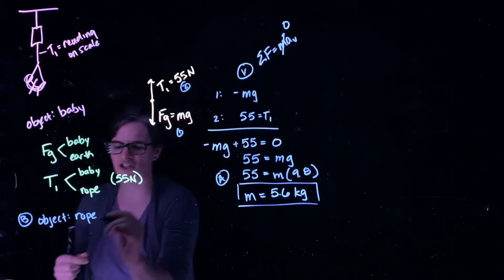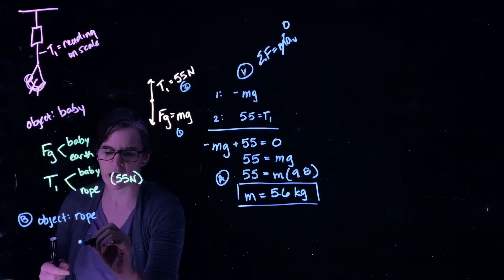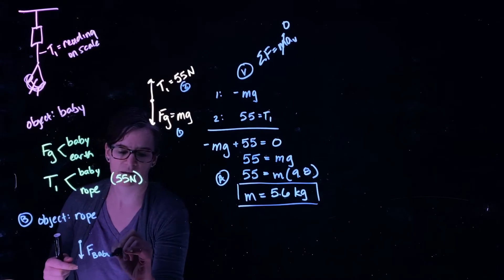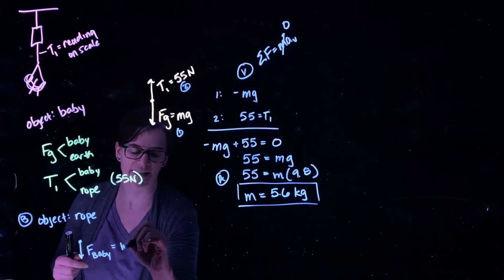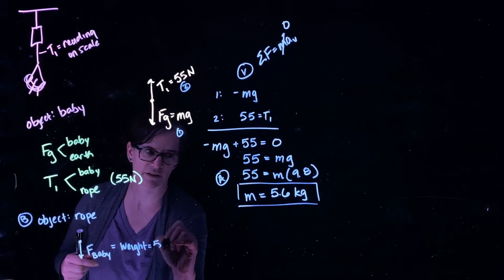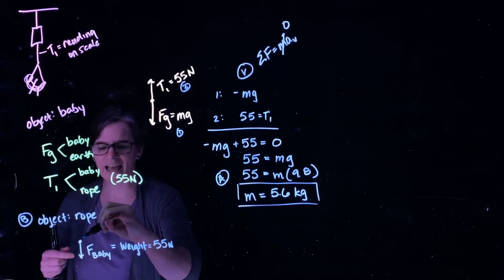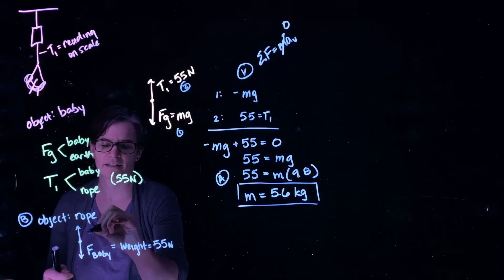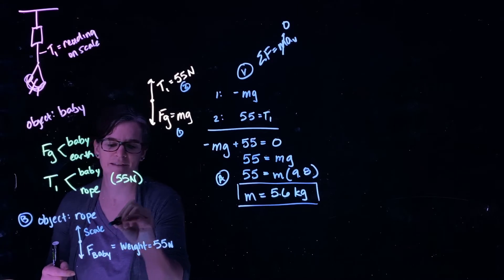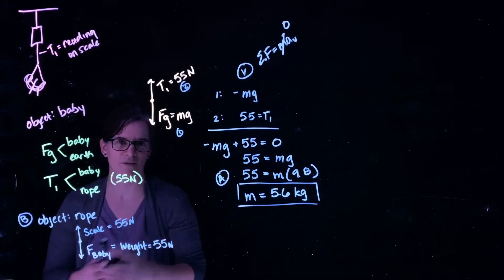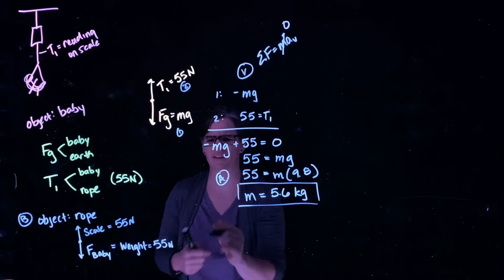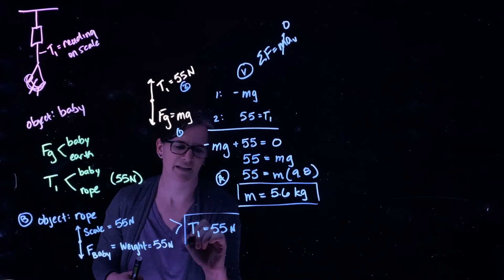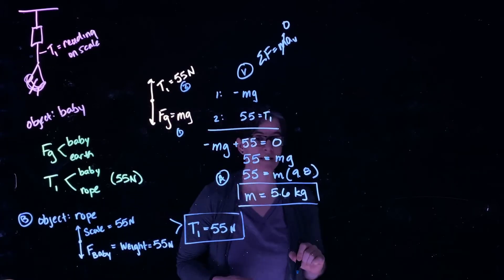If we think about the tension in that rope, we have the force of the baby acting down—equal to the baby's weight, which we said was 55 newtons. And we have that force upward from the scale reading, which also has to equal 55 newtons. So the tension T1 equals 55 newtons. That's our Part B: the tension in the rope equals 55 newtons.